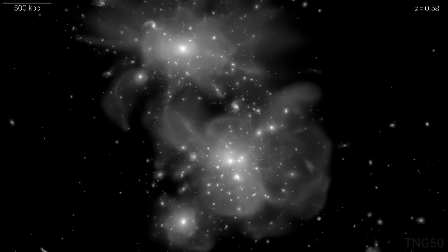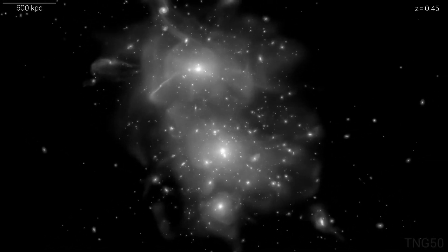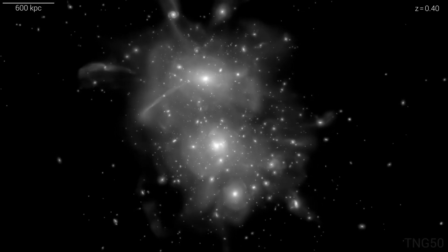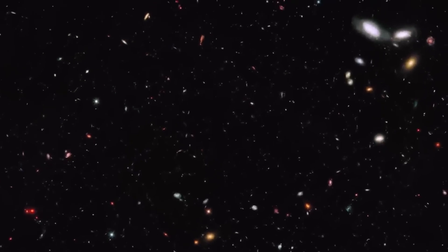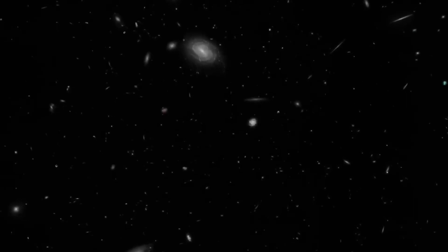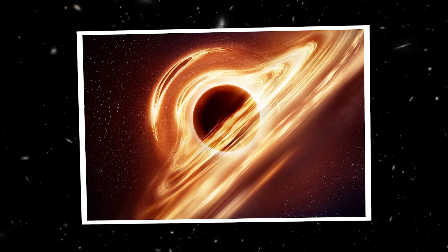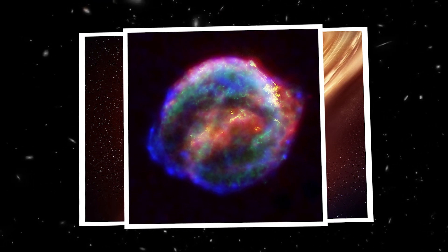FLAMINGO goes beyond considering gravity alone. While dark matter makes up most of the mass of the universe, ordinary matter, despite representing only a fifth of the total mass, exerts a significant influence on the distribution of matter on smaller scales. Factors such as galactic winds, driven by supermassive black holes and supernova explosions, can affect the formation and evolution of galaxies.